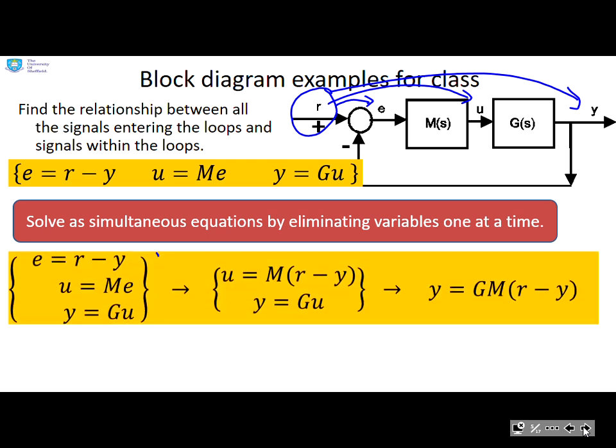So first, I write the three equations here in a column. And now what I'm going to do is I'm going to take the variable e and eliminate it by plugging it in there. And there you can see I've now reduced myself to two equations. And then what I'm going to do is I'm going to take the variable u and plug it in there.